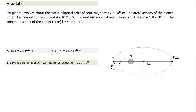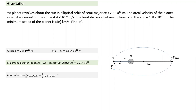Once we find e, we can find the maximum distance. Maximum distance is 2a minus minimum distance — e is not even required here. So maximum distance equals 2a minus minimum distance. Once that distance is known, aerial velocity equals one-half times v_max times r_min, which also equals one-half times v_minimum times r_max. Equating aerial velocity to this term, we can find minimum velocity.